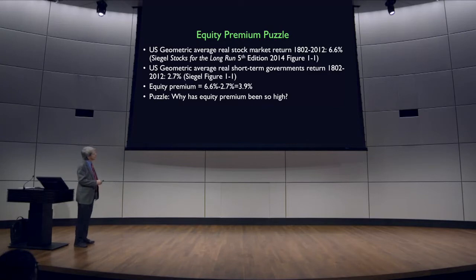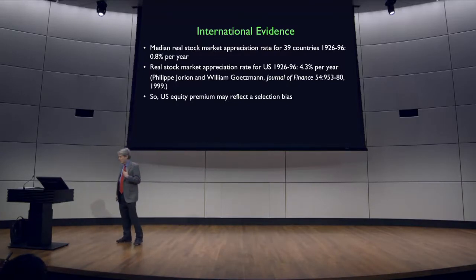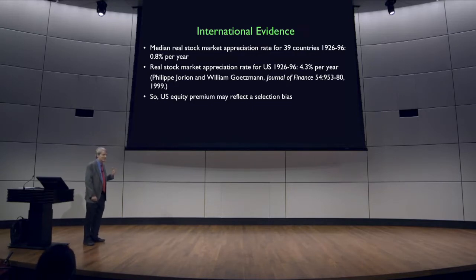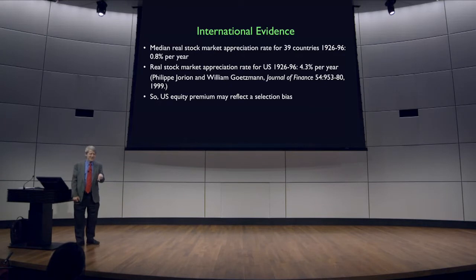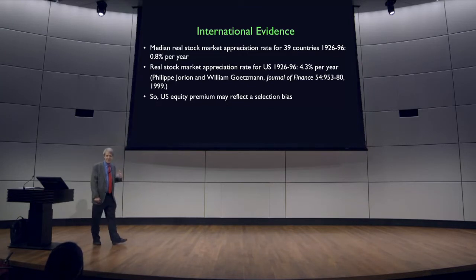That's what we're going to try to understand with the Capital Asset Pricing Model — and it's not just for the US, but not as dramatically. Will Goetzmann said that to some extent the US equity premium reflects a selection bias problem. The United States is the most successful capitalist country in the world, so looking at the success of stock market investments in the United States may be misleading.